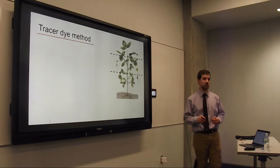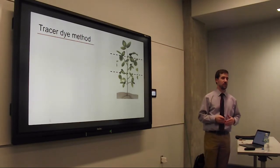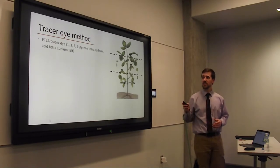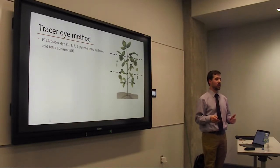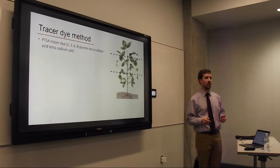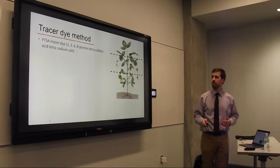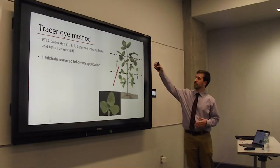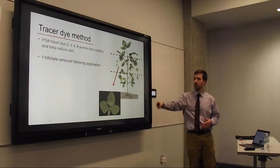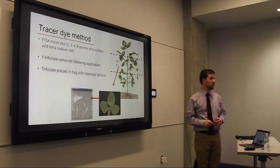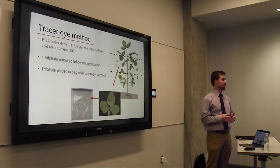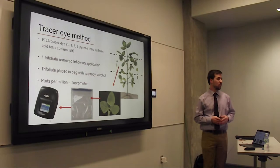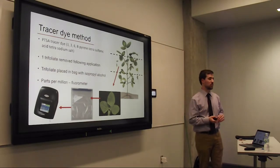The second method is the Tracer Dye Method, which is relatively new for tracking fungicides and has been used a lot in the weed science literature. A PTSA tracer dye is mixed into the fungicide tank prior to application at a rate of half a pound per 100 gallons of spray volume. Immediately following application, I would remove a trifoil from the upper, middle, and lower canopy zones. These trifoils were placed in a bag with isopropyl alcohol, agitated for 15 seconds, and the remaining liquid was sent to a fluorometer for a parts per million reading.